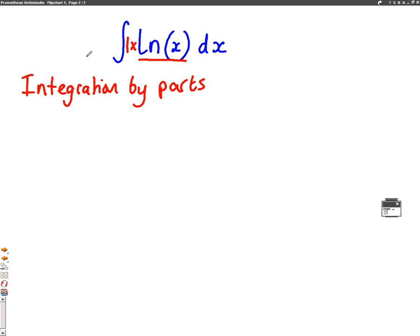So integration by parts, you're going to need to choose what u and v dash are. We're going to choose u to be log x. That means that u dash, the differential of log x, is 1 over x. v dash is the other term, which we're going to choose to be 1. So integrate that to find what v was. The integral of 1 is just x.